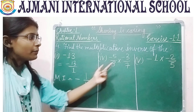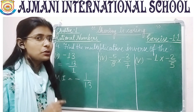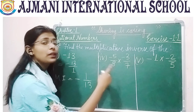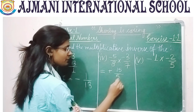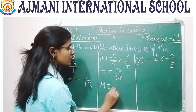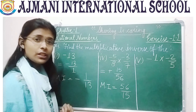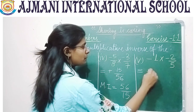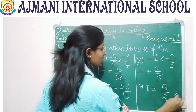For a question like minus 5 by 8 multiplied by minus 3 by 7, do not jump to the multiplicative inverse directly — first solve it. Since the numbers are mostly prime and cannot be cancelled, you get 15 by 56 as your rational number, and its multiplicative inverse is 56 by 15. For minus 1 multiplied by minus 2 by 5, the two negatives give plus 2 by 5, and its multiplicative inverse is 5 by 2. Additive and multiplicative inverses are different from each other.